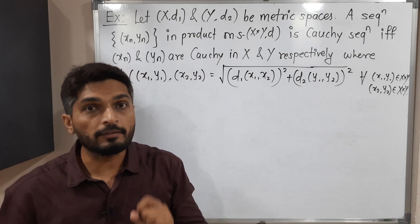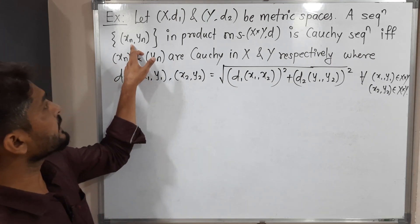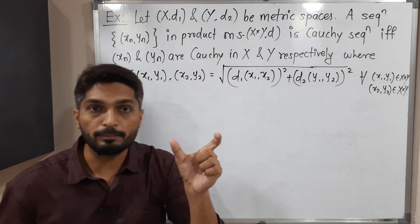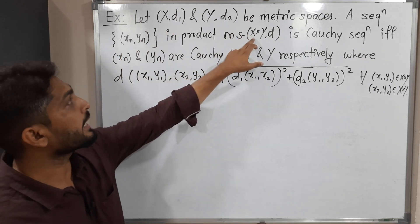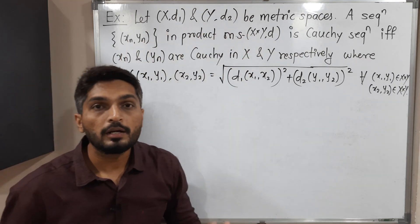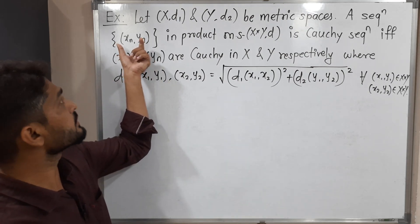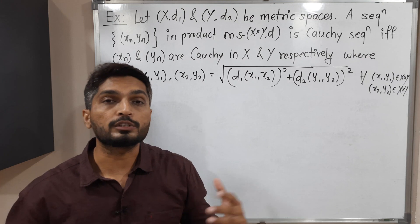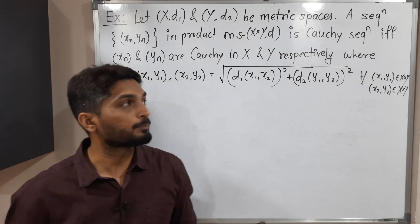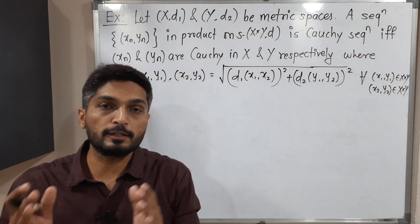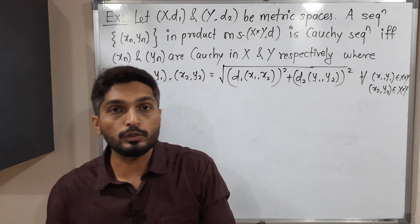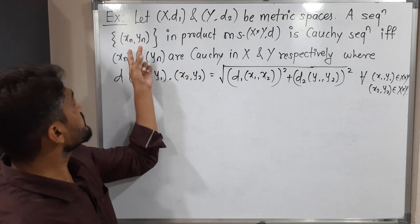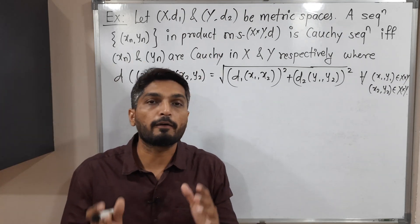What we have to prove: we have to prove that if you have any Cauchy sequence (xn, yn) in the product metric space X cross Y, then xn is Cauchy in X and yn is Cauchy in Y. And the converse part also we have to prove — it is an if and only if statement. So xn, yn is Cauchy in X cross Y if and only if xn is Cauchy in X and yn is Cauchy in Y. We have to prove both directions.